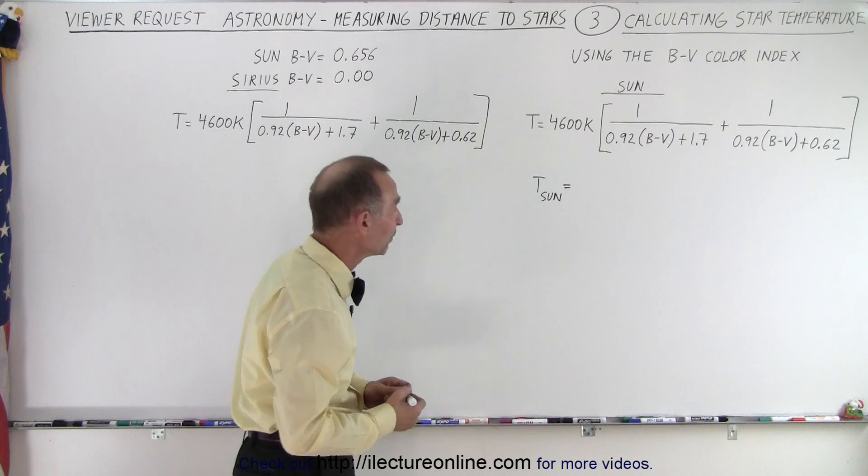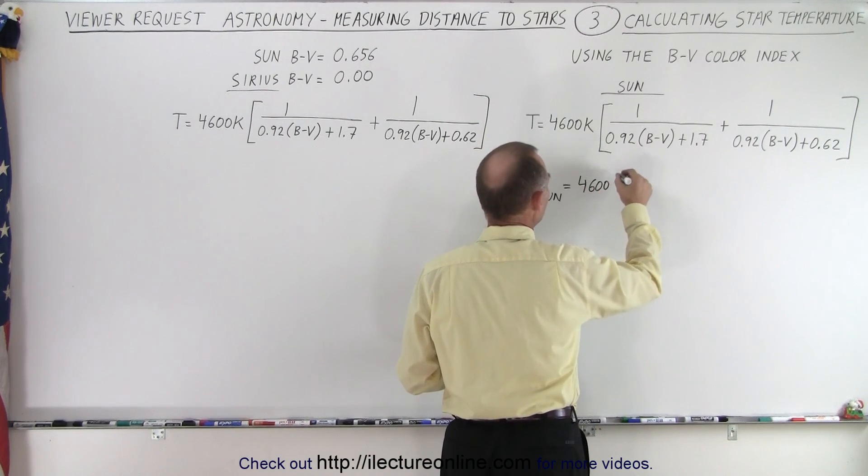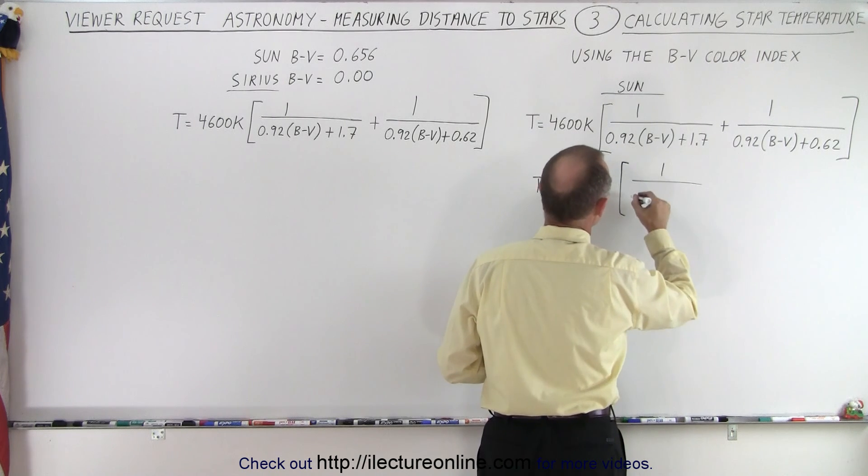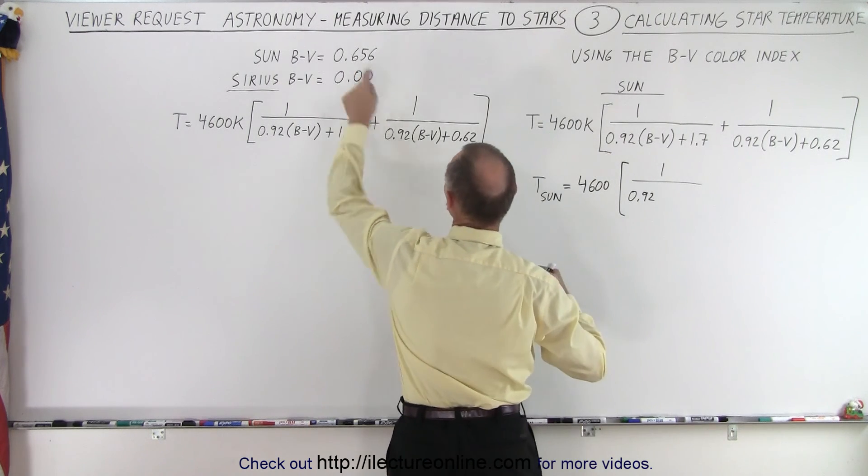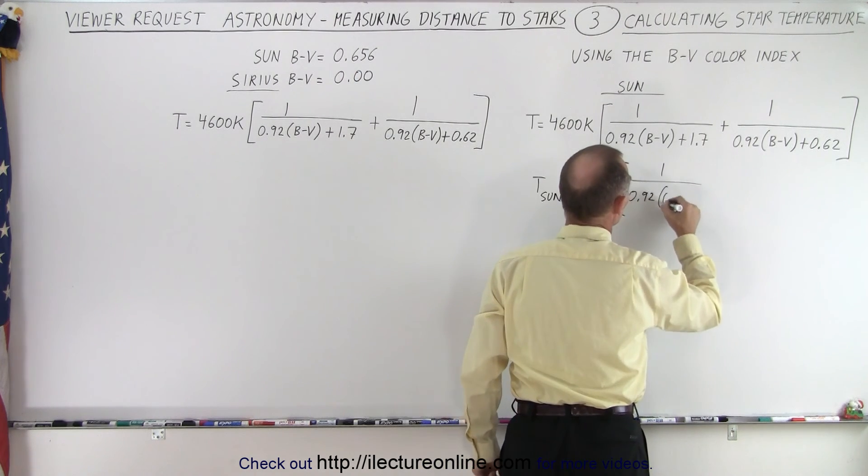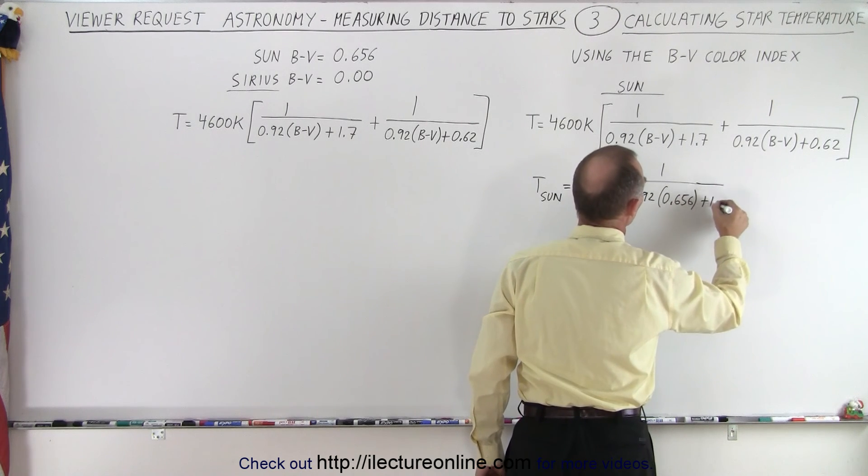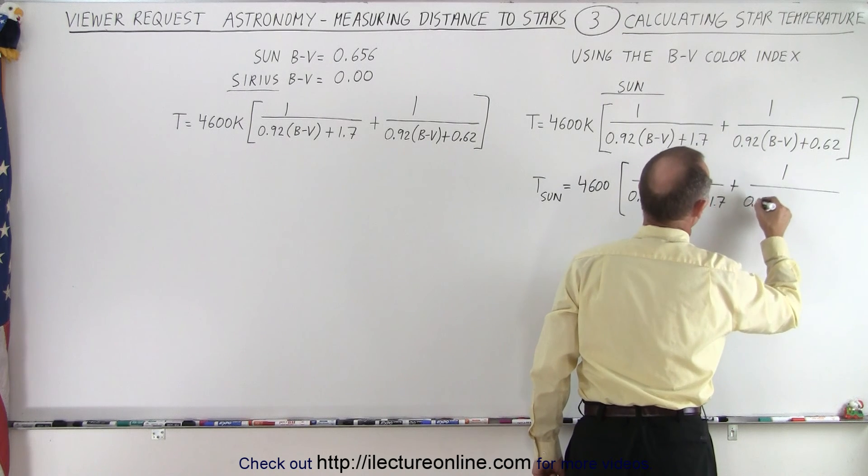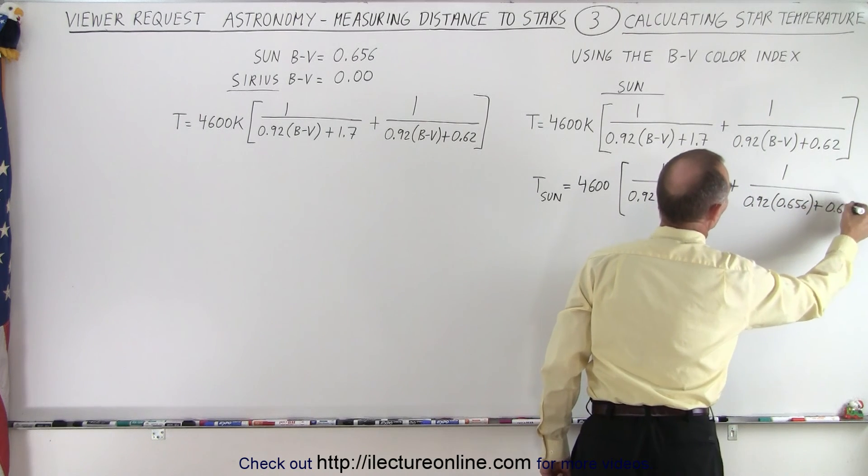So here let's try for the Sun. This is equal to 4600 times, and I'll leave off the Kelvin symbol, 1 over 0.92 times B minus V for the Sun is 0.656, so 0.656 and then plus 1.7 and then we add 1 over 0.92 times 0.656 plus 0.62.